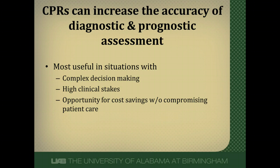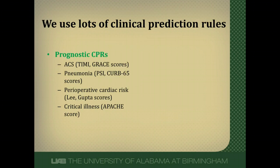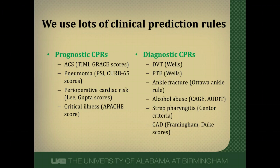Those are the three uses of clinical prediction rules, and most commonly they are used to determine pretest probability of disease. We use many clinical prediction rules — for example, everyone has calculated a TIMI score for acute coronary syndromes, and many use CURB-65 or PSI scores for pneumonia. Common diagnostic ones include the Wells rules for DVT and PE. There are also criteria developed by Dr. Centor to detect streptococcal pharyngitis.